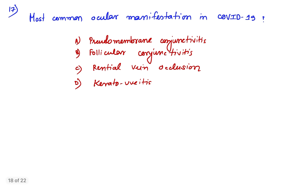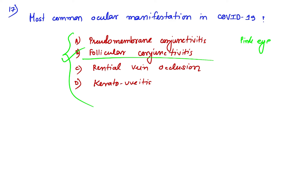Question number 17: Most common ocular manifestation in COVID-19. COVID-19 coronavirus also affects the ocular system. The most common manifestation is conjunctivitis — follicular conjunctivitis, also known as COVID-19 eye or pink eye. Follicular conjunctivitis is most commonly seen in COVID-19. Other options included pseudomembranous conjunctivitis, retinal vein occlusions, and keratouveitis.